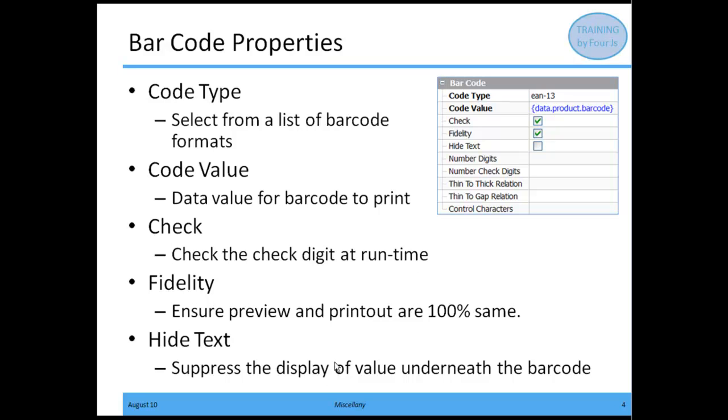The last main property is hide text. If you want to suppress the display of values underneath the barcode, you can check the hide text Boolean.